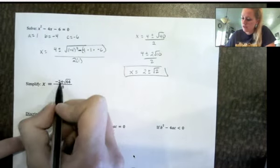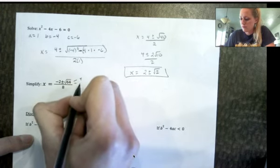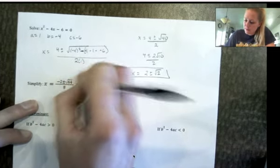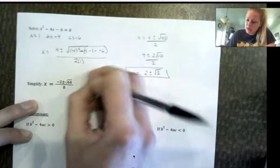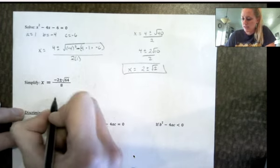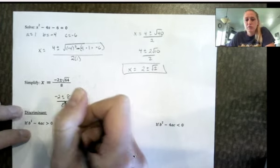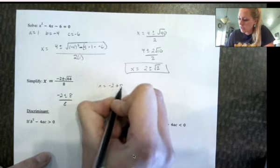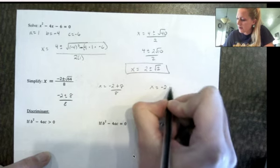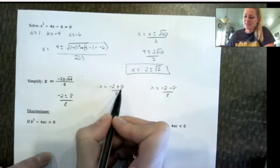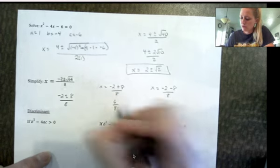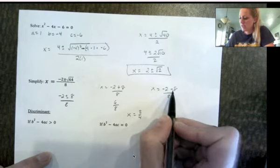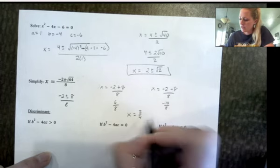Another simplifying example: break down the square root of 64. I started to factor it as 4 times 16, but I should recognize that 64 is a perfect square — square root of 64 is just 8. So we have negative 2 plus or minus 8, over 8. Since we get a whole integer, go ahead and do the addition and subtraction: negative 2 plus 8 is 6, and 6 over 8 reduces to 3/4. Negative 2 minus 8 is negative 10, and negative 10 over 8 reduces to negative 5/4. So x equals 3/4 or negative 5/4.